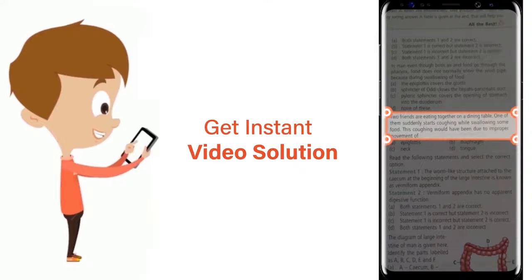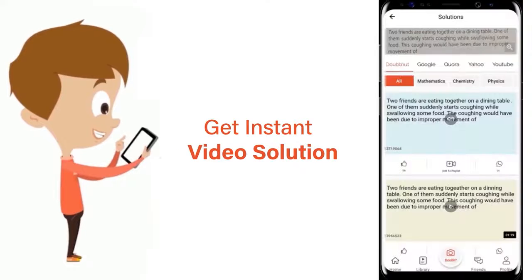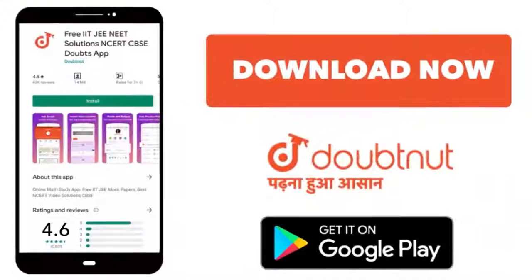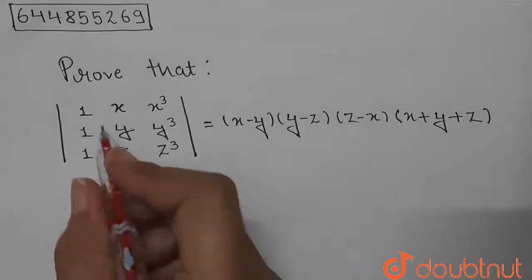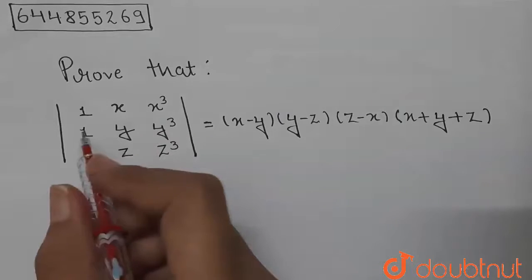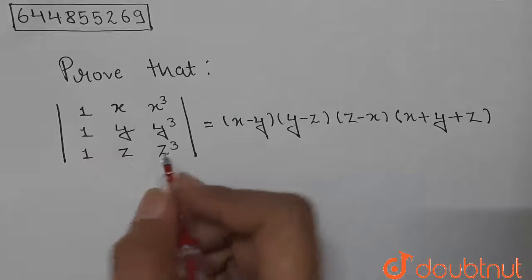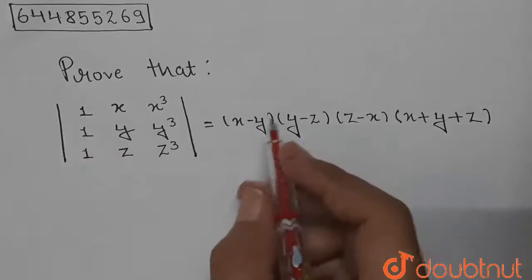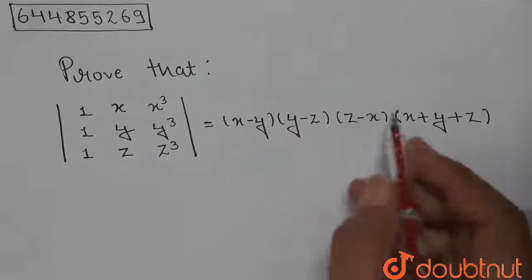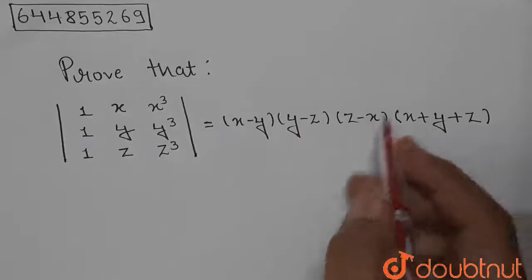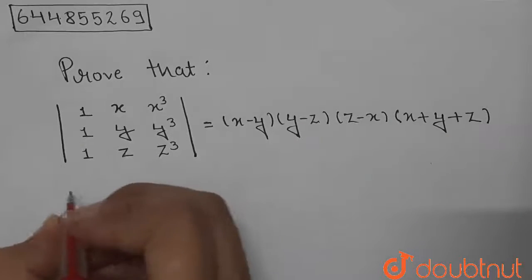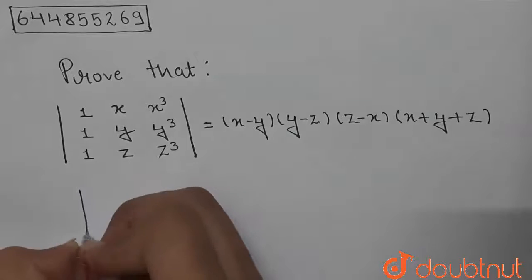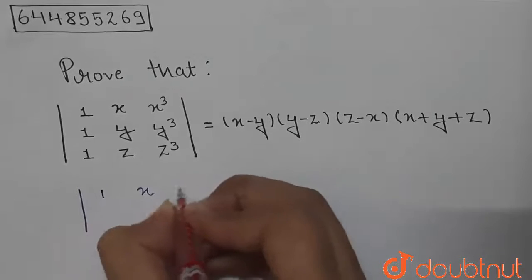Hello students, today's question is: prove that the determinant with rows (1, x, x³), (1, y, y³), (1, z, z³) is equal to (x minus y)(y minus z)(z minus x)(x plus y plus z). So we are given this determinant with those three rows.